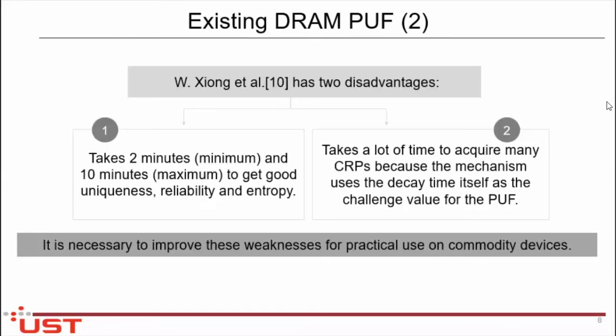There are two disadvantages to that approach. The first disadvantage is that it takes 2 to 10 minutes to achieve good uniqueness, reliability, and entropy. The second disadvantage is that, because of this very large time window of 2 to 10 seconds, it requires a lot of time to acquire challenge-response pairs.